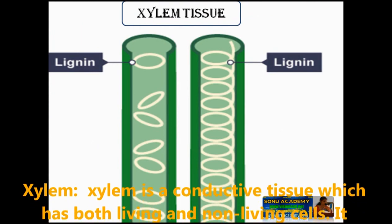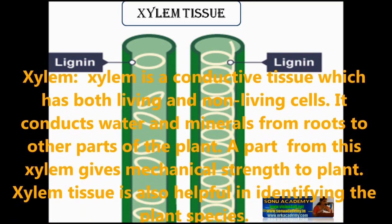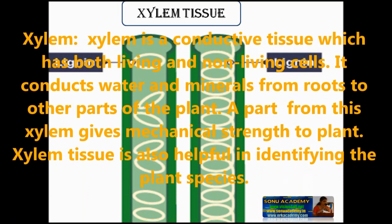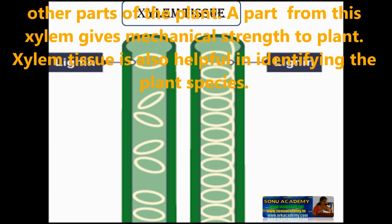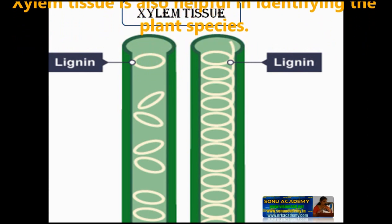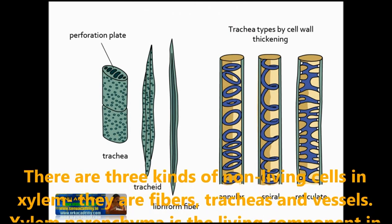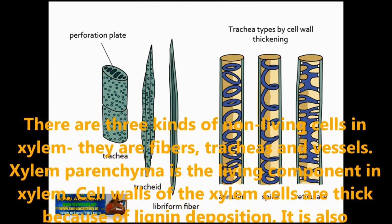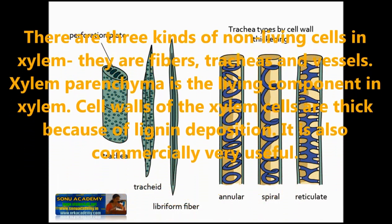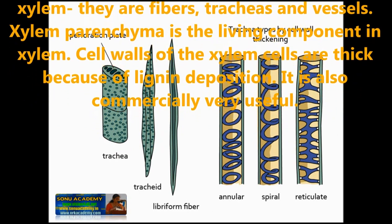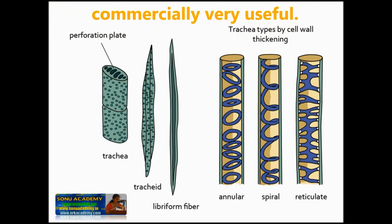Xylem is a conductive tissue which has both living and non-living cells. It conducts water and minerals from roots to other parts of the plant. Apart from this, xylem gives mechanical strength to the plant and also helps in identifying the plant's age. There are three kinds of non-living cells in xylem: fibers, tracheids and vessels. Xylem parenchyma is the living component in xylem. Cell walls of xylem are thick because of lignin deposition, and xylem is also commercially very useful.